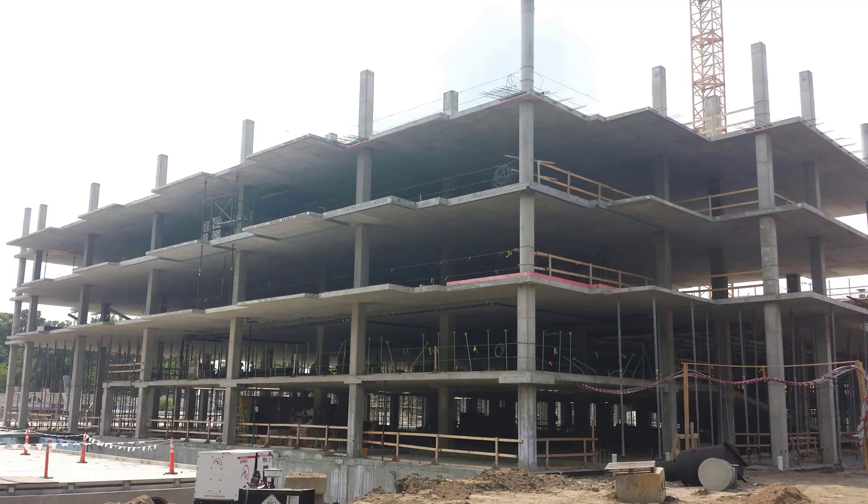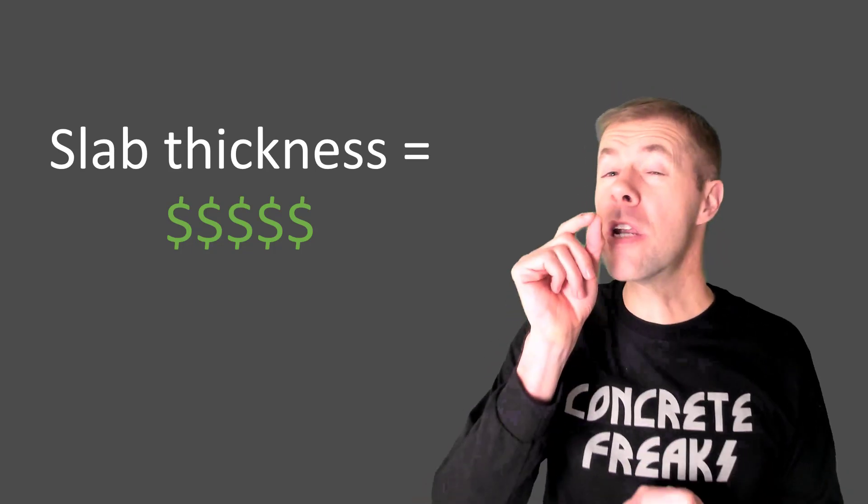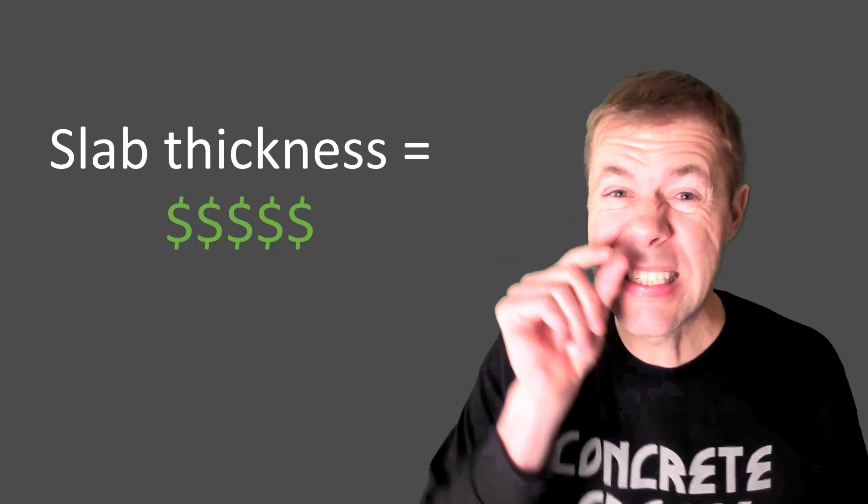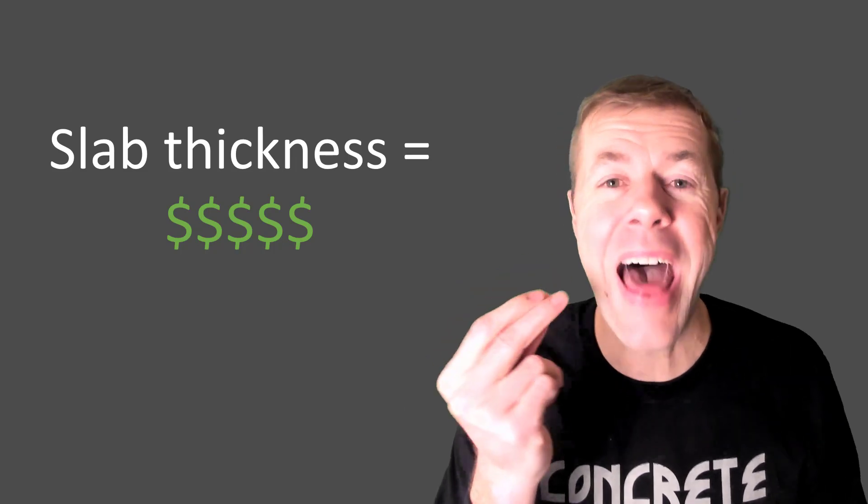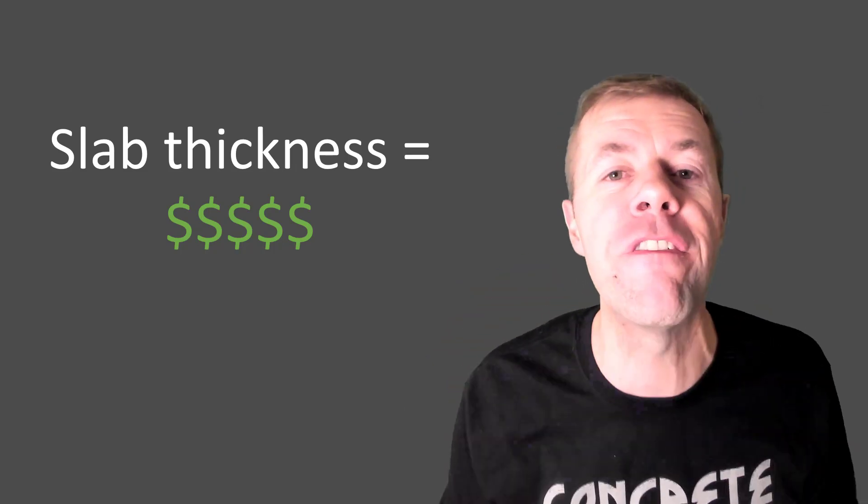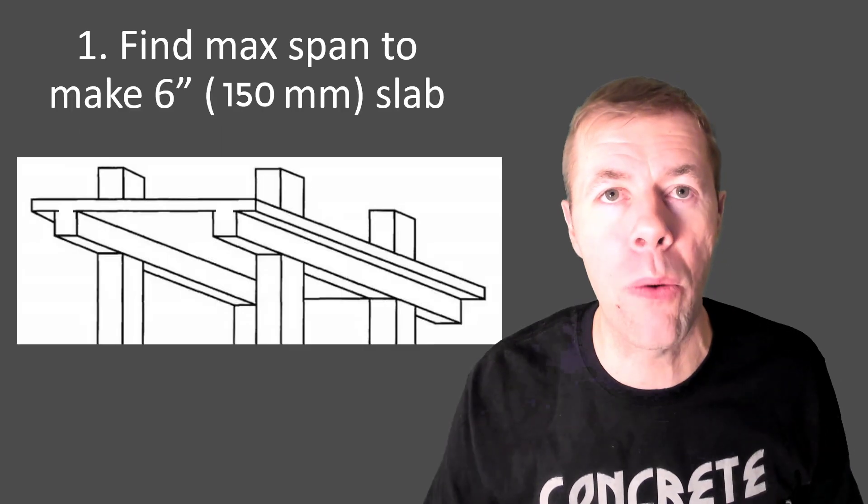Now if we're gonna figure out a big building like this, we got to figure out where do the columns, the beams, the slabs, where do they all go. The number one tip I can give you is slab thickness, at least for low-rise buildings, that is where the money is and that is where you have to focus to make sure you get that right.